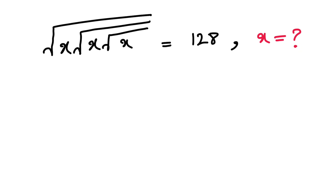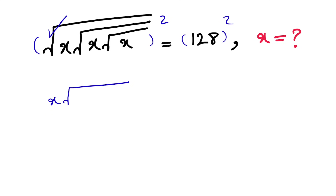We have a square root on the left side, so we are trying to get rid of the square root. We're going to take the power of 2 on each side, and that way we can get rid of the outer square root. So we'll have x times square root of x times square root of x is equal to 128 to the power of 2.